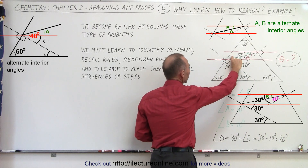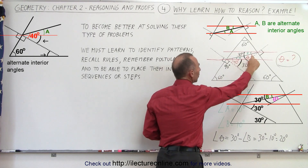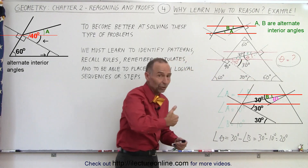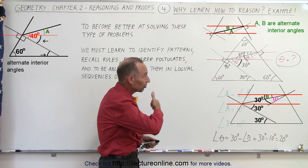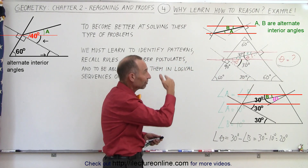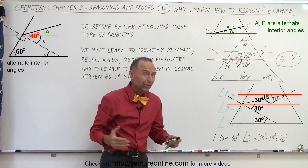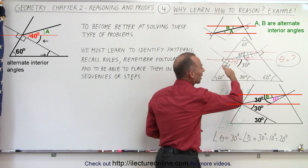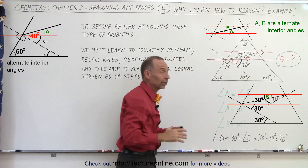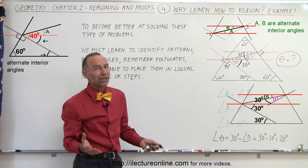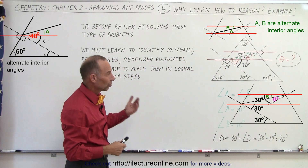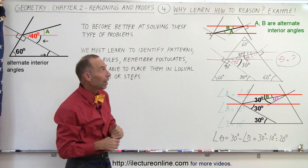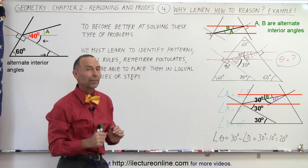We were given that this angle is 40 degrees, and we're trying to find the measure of angle theta. Notice it took about five logical steps to get from one to the other. That is why we learn geometry — to learn how to do these kinds of problems. There are probably many examples we can come up with that show us the reason why we must learn how to reason through these kinds of steps.